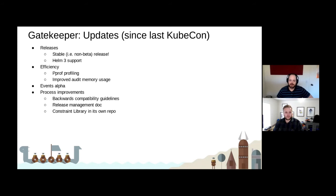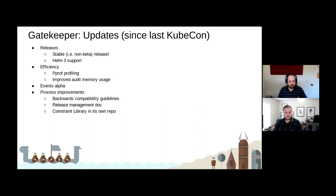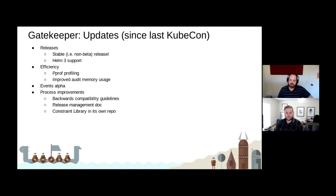We are exploring an events framework where certain audit incidents or rejections are reported to the user as Kubernetes events. We would definitely like feedback on the granularity that users would like to see for events. There are also a lot of process improvements on the backend. Backwards compatibility guidelines are a big one for users who want confidence in how to maintain compatibility across upgrades. The release management doc will give you some idea of our release cadence. We have also split the constraint template library — a repository of constraint templates developed by the community — into its own repository.